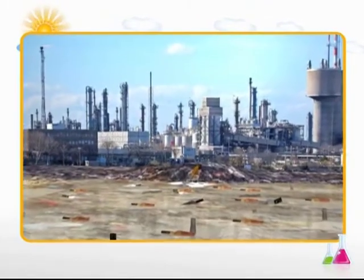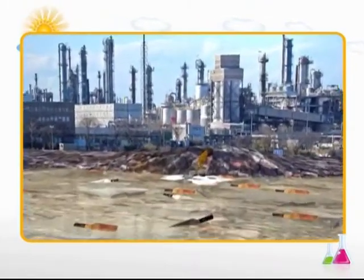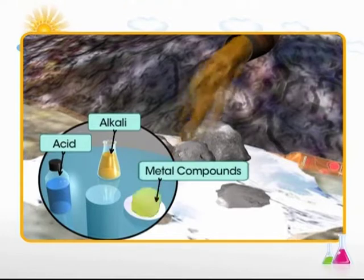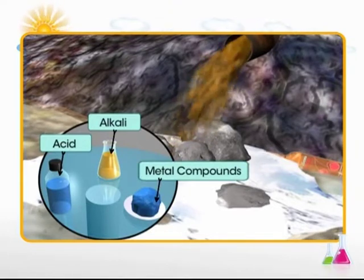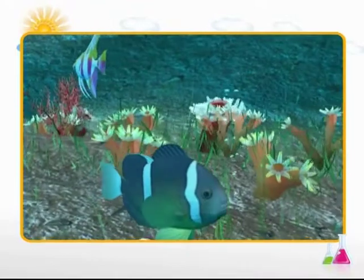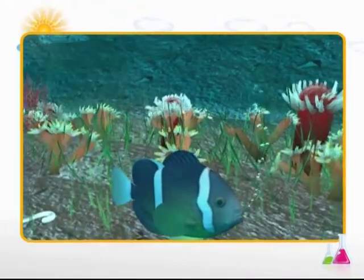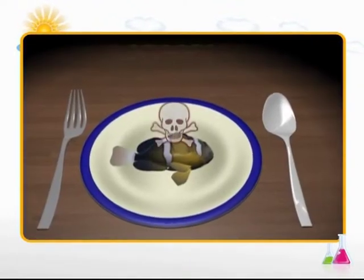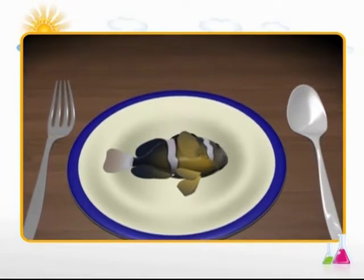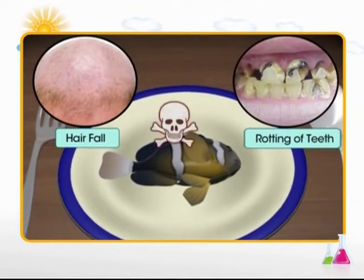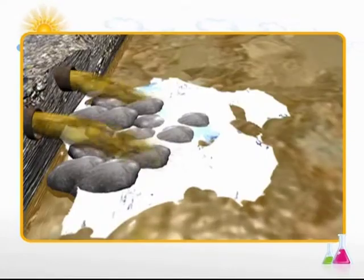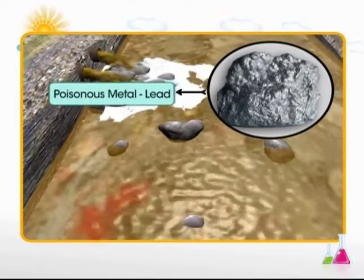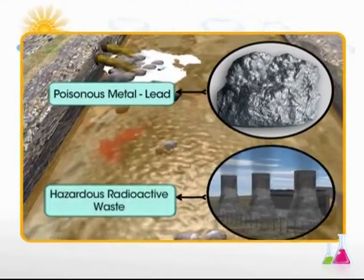Industrial waste is the major water pollutant. Some of the common wastes like acid, alkali and metal compounds are dumped in rivers by chemical factories. Metal pollutants like mercury do not kill fish, but accumulate in their bodies. Consumption of such contaminated fish leads to accumulation of metal in our body and results in hair fall, rotting of teeth and even death. Lead is another hazardous water pollutant, but the most dangerous water pollutants are radioactive wastes from nuclear plants.